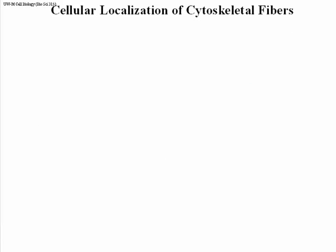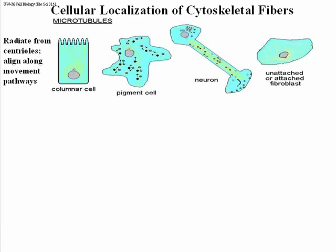We can localize these three major kinds of filaments, and you will see that they are localized differently in cells. Looking at microtubules in all four of these cells, the yellow structures seem to emanate from something around the nucleus — a pair of centrioles that characterize animal cells. Centrioles are made up of microtubules, so they are the focal point for assembling microtubules in animal cells. In two out of three cases very clearly, the microtubules are radiating out from the centriole.